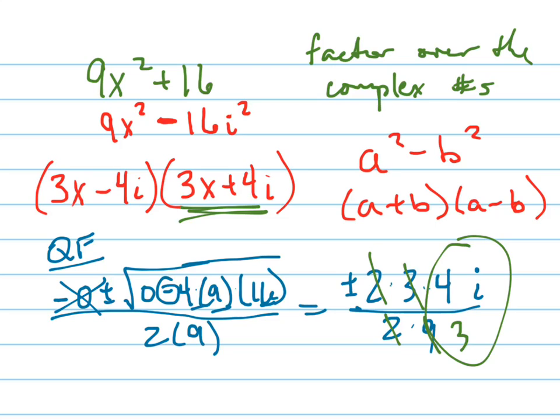It is because if you multiply it by 3, or if you divide, if you factor 3 out of this right here, you would get 3 times x plus 4 thirds i. That's the same thing. If you factor 3 out of this, you'd get 3 times x minus 4 thirds i.